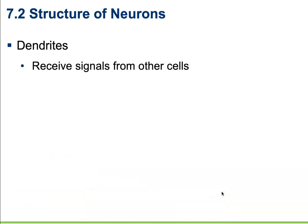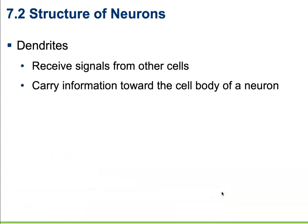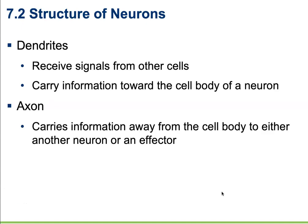The dendrites will receive signals from other cells and carry the information towards the cell body of a neuron. The axon is going to carry information away from the cell body, either to another neuron or to an effector — either a muscle or a gland.